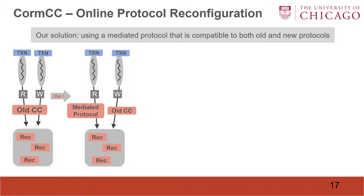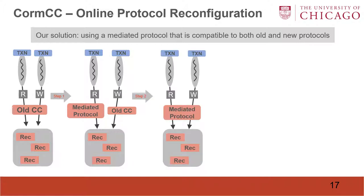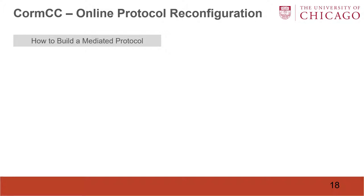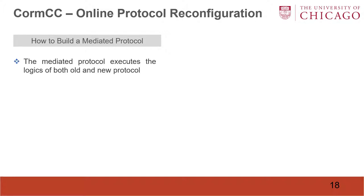We take a new solution by using a mediated protocol that is compatible with both old and new protocols such that conflicts can be detected. At first, we require all working threads to change their protocol from old CC to the mediated protocol. When all working threads have switched to the mediated protocol, then we let them switch to the new protocol. During this process, because the mediated protocol is compatible with both old and new, conflicts can be detected. The question is how to build a mediated protocol. We build it by executing the logic of both old and new protocols.